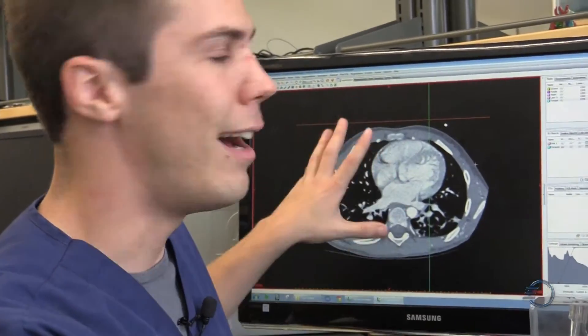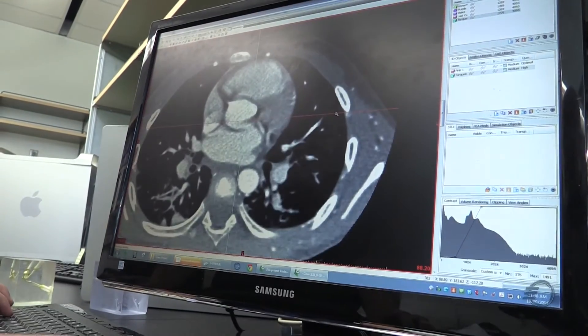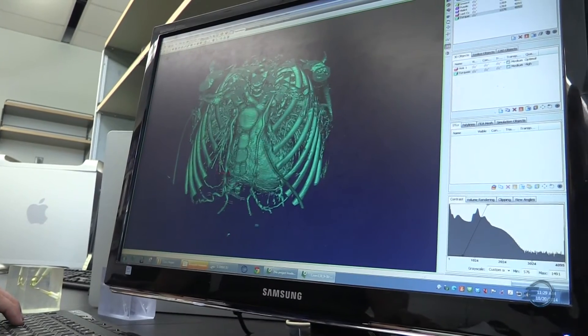Doctors and physicians are used to seeing grayscale images on a screen, very similar to what we have back here. This is a CT scan. So this is what they're used to seeing, something very two-dimensional in terms of representation, but 3D printing can bring that to the physical world.